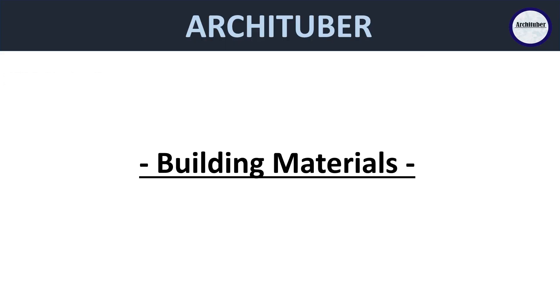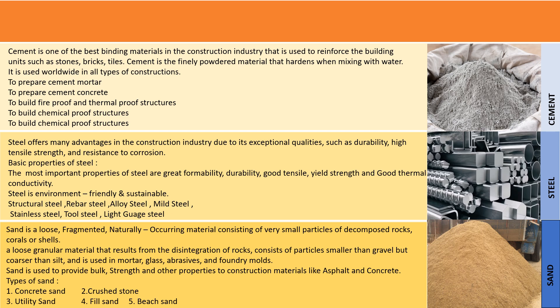Coming on to building materials — we have cement, steel, and sand. You can take a screenshot of this slide, print it out, and stick it on your revision board so you can review the properties and uses of each material. Cement is one of the best binding materials; it is used to prepare cement mortar and cement concrete, and for building chemical-proof, fireproof, and thermal structures.